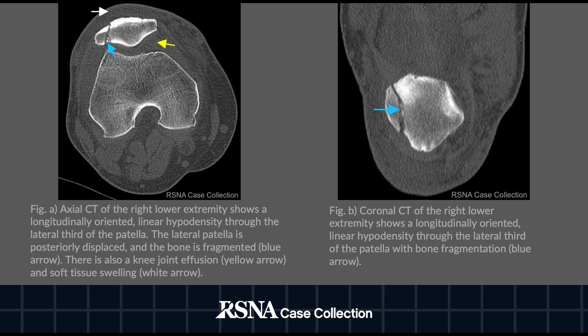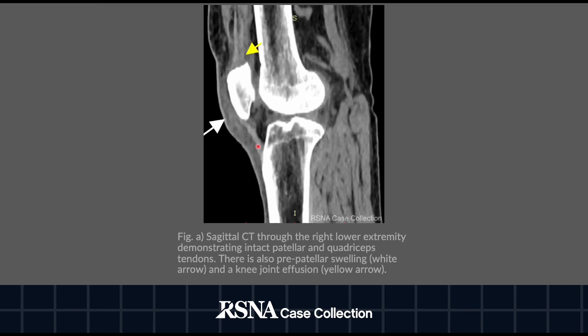The image on the right is a coronal CT of the right lower extremity demonstrating the same linear hypodensity seen in the prior images. Bone fragmentation can also be appreciated along the lateral facet of the patella, indicated by the blue arrow. The sagittal CT through the right lower extremity demonstrates intact patellar and quadriceps tendons, in addition to pre-patellar soft tissue swelling indicated by the white arrow and a knee joint effusion indicated by the yellow arrow.